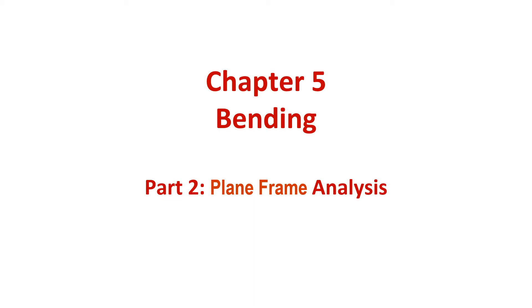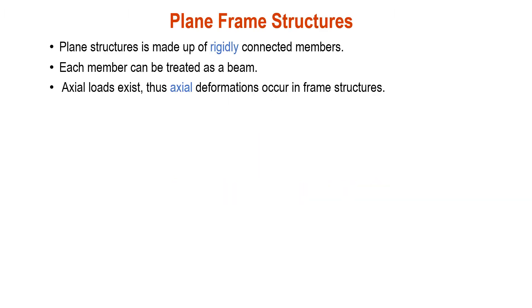In Part 2 of Chapter 5, we will discuss plane frame analysis. Plane structures are made up of rigidly connected members. Each member can be treated as a beam. In this case, axial loads exist, and thus it will cause axial deformations or axial displacement in the frame structure.